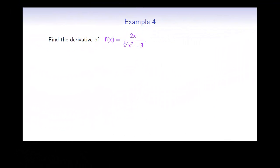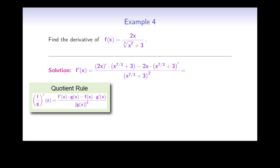In the fourth example, we need to find the derivative of f of x equals 2x divided by the cube root of x to the 7, plus 3. Note that the cube root of x to the 7 is the same as x to the power of 7/3. Using the quotient rule, we conclude that f prime of x will be equal to the derivative of the numerator, 2x, times the denominator, x to the 7/3 plus 3, minus the numerator, 2x, times the derivative of the denominator, x to the 7/3 plus 3. This we have to divide by the square of the denominator, which is x to the 7/3 plus 3 squared.